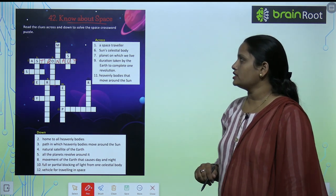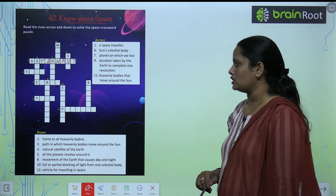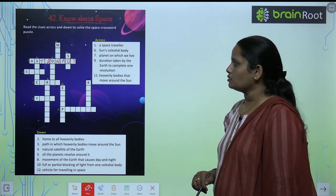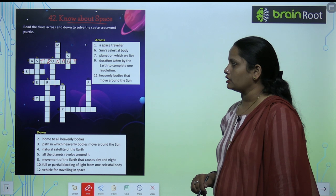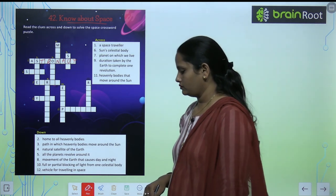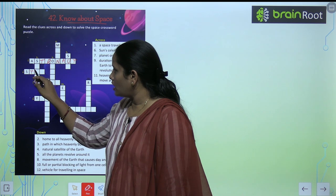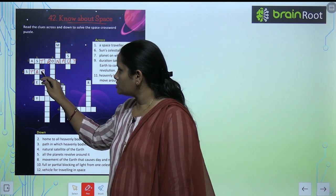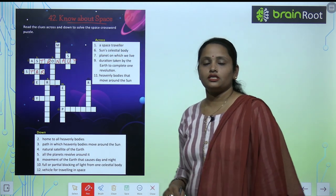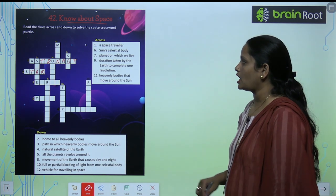Second is sun's celestial body. Sun ke celestial body ko hum kya kette hai? And it is a star. So sun's celestial body is a star.